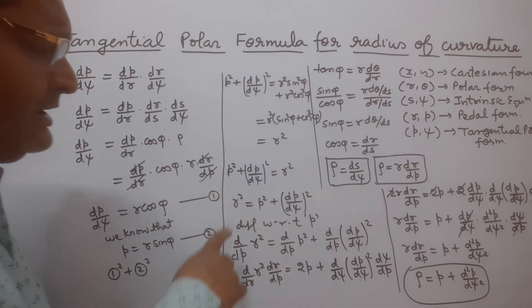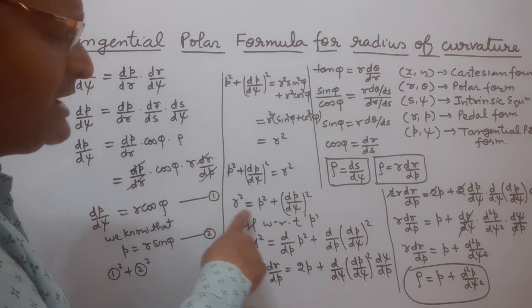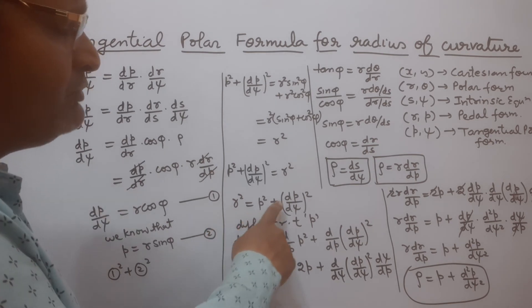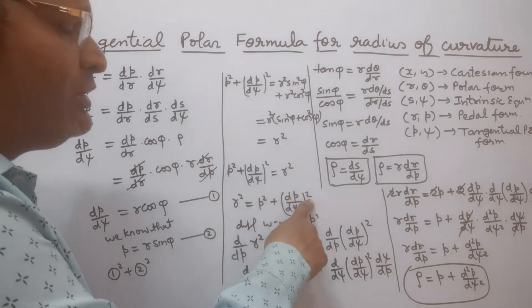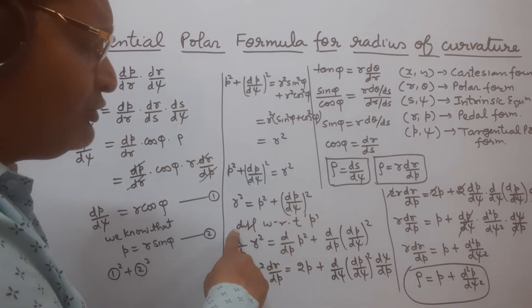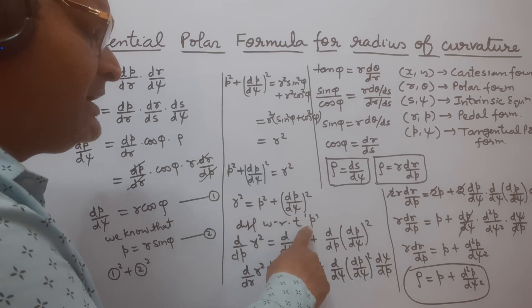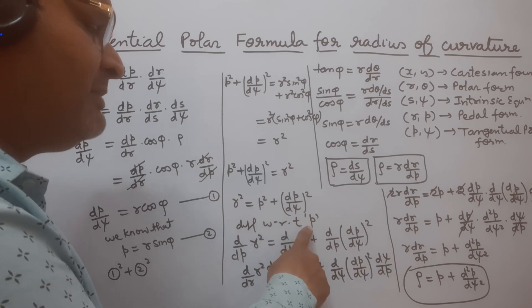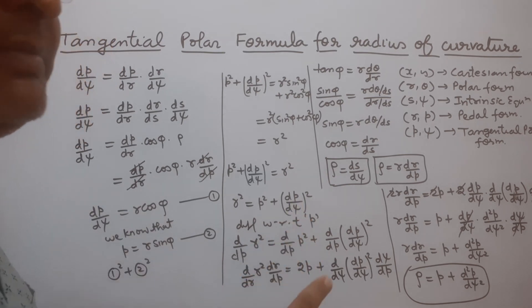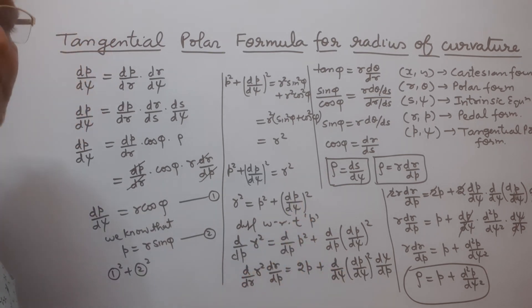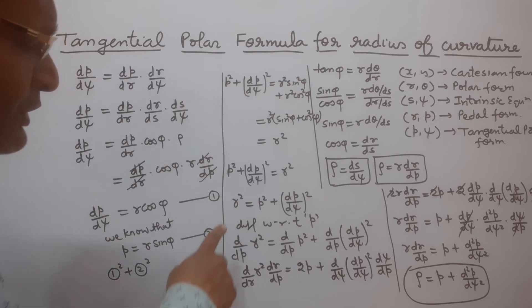So you can see here r² = p² + (dp/dψ)², where small p is the length of perpendicular drawn from the pole on the tangent.